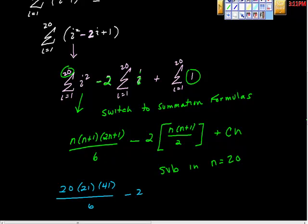Minus 2 times, again, same thing, 20 times 21. Just every place I found an n, I'm putting in 20. So 20 plus 1 is just 21 right here, and this 2 down here is this one here. Plus c, our constant was 1, times 20 is 20, so plus 20.